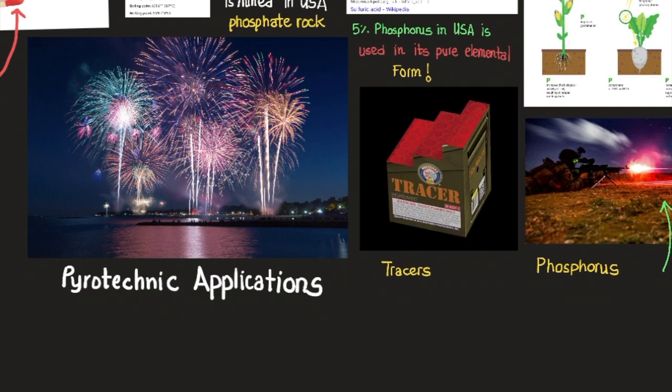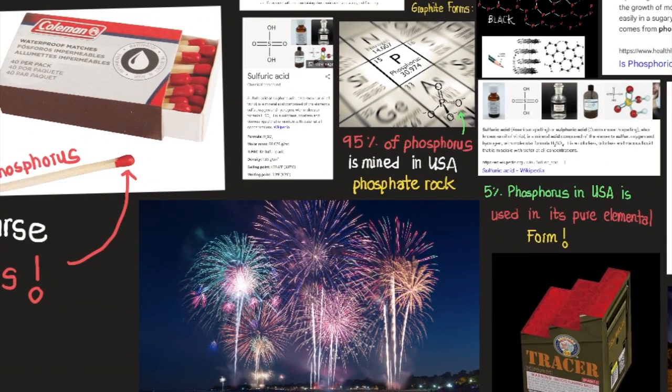If we can't change or adapt quickly enough, we die. If the viruses multiply faster than our cells can multiply and defeat them, then we die — that's all that life is: a race against entropy, a race against time. Phosphorus is able to change rapidly enough to keep us alive and energized. 95% of the phosphorus mined in the US is in the form of phosphate rock. Five percent is used in its pure elemental form — and a lot of elements are usually not used in their elemental form.